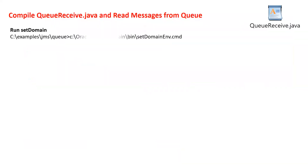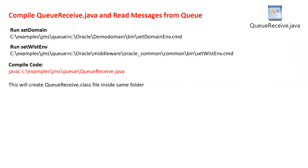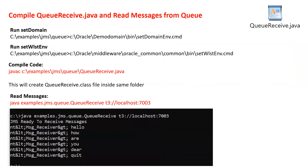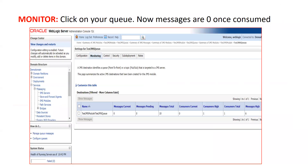To receive the messages, run the set domain and set WLS environment commands again, compile QueueReceive.java the same way, then run it just like the send code. It will read all messages from the queue — 'Hello,' 'How are you dear,' 'quit,' all six messages. Once received, go back to the console, click your JMS module queue, and check the Monitoring tab. The message current count is now zero because the messages have been consumed. Whenever messages are successfully consumed by the destination, they are automatically removed from the message queue.